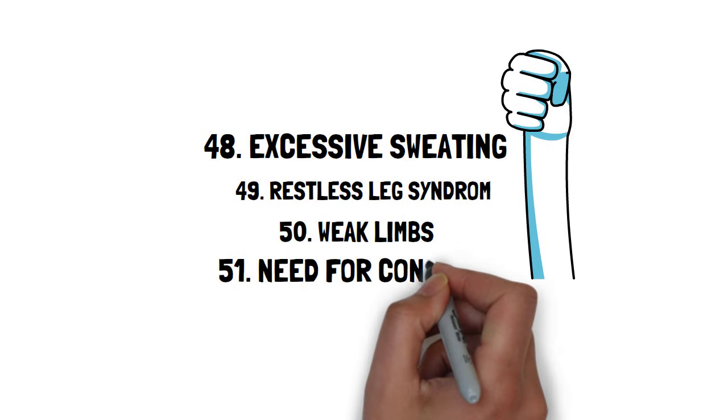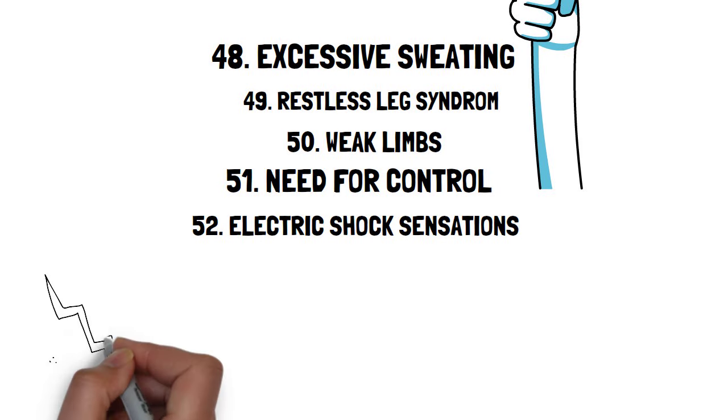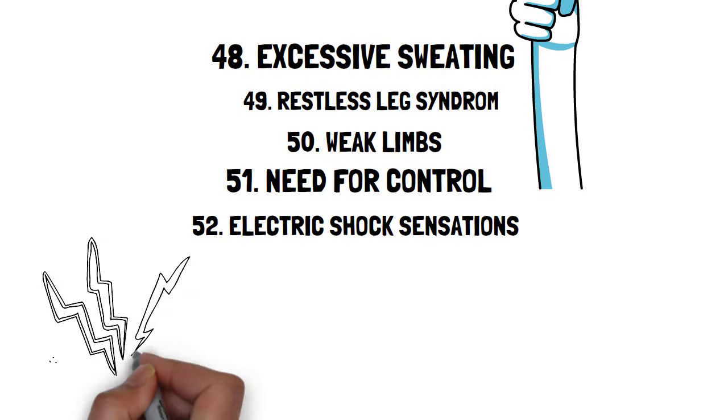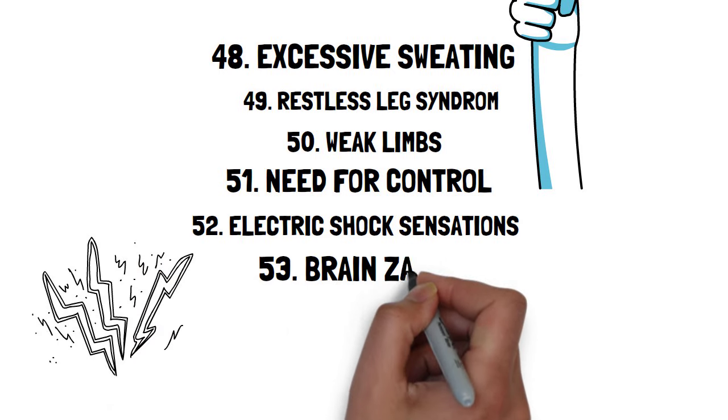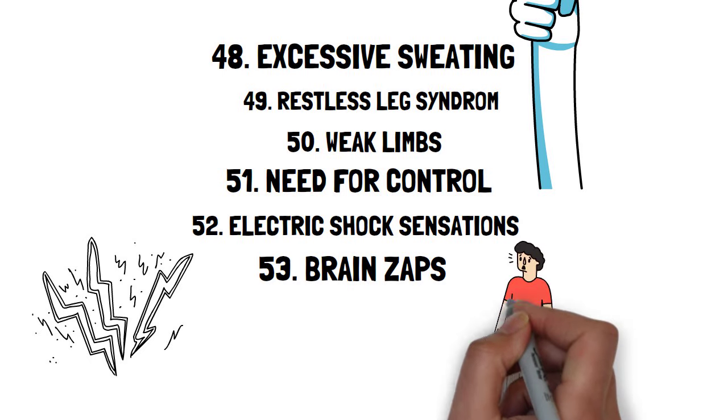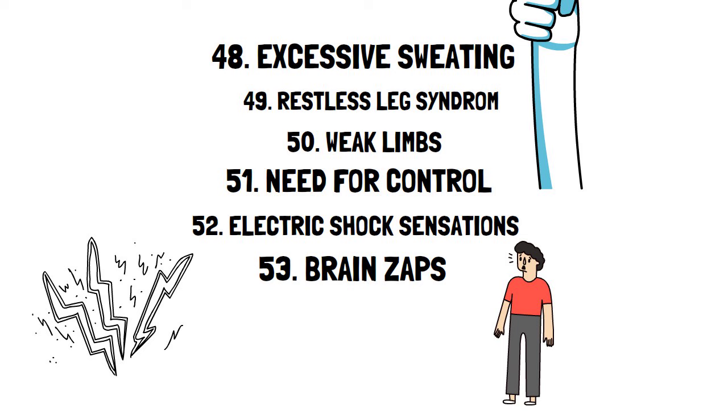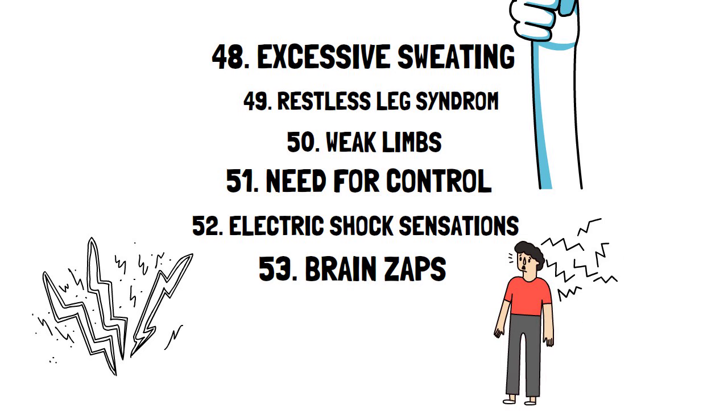Fifty-one, intense need for control. Fifty-two, electric shock feelings. These are like electric jolts starting from the scalp or spine that quickly spread throughout the body. Often in combination with fifty-three, brain zaps. Easily one of the scariest ones for me. They felt like either my brain was shut off for one second or that every cell in my brain was fired up all at once, often followed by a burst of dizziness.